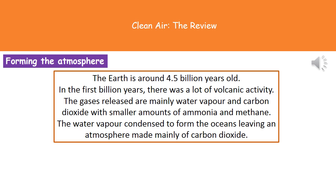From those volcanoes that were erupting a lot of the time, gases were being released, and they were mainly water vapor and carbon dioxide. In addition to that, we had much smaller amounts of ammonia and methane being released at the same time. So in that first billion years of our atmosphere's formation, we didn't really have oxygen available, and the atmosphere wouldn't have supported life as we know it.